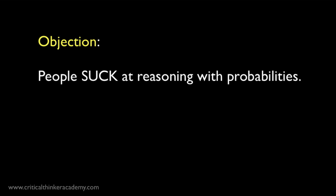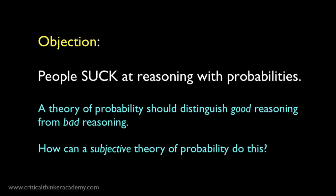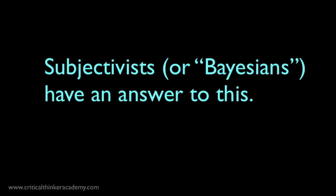At this point, there's an obvious objection to interpreting probability in this way. People are notoriously bad at reasoning with probabilities. Our degrees of belief routinely violate the basic mathematical rules for reasoning with probabilities. If probabilities are interpreted as mere subjective degrees of belief, then in what sense can we possibly have a theory of probability — a theory that distinguishes good reasoning from bad reasoning? Subjectivists, or Bayesians as they're often called, have an answer to this question. They argue that the only logically consistent way of reasoning with subjective degrees of belief is if those degrees of belief satisfy the basic mathematical rules of reasoning with probabilities. All the action in the subjective interpretation lies in the details of this argument.